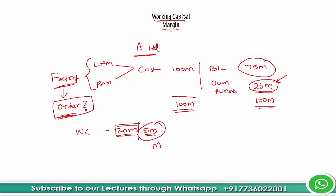But what is this 5 million? This 5 million is the margin which he is expected to bring — but he has already invested everything he had. So, in order to help him come out of this strain, what the banking system will do is, when they consider the total cost of project, they will also add this working capital margin. In that case, the cost of the project will not be 100 million — it will be 105 million.